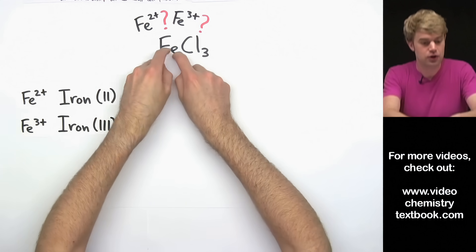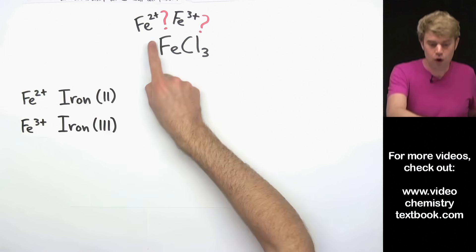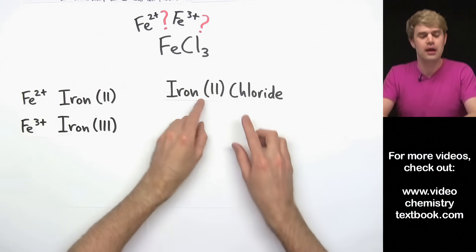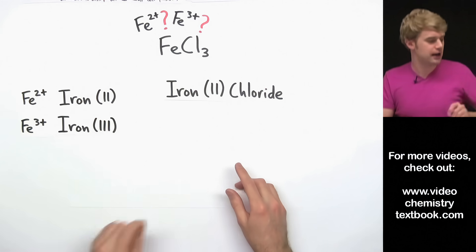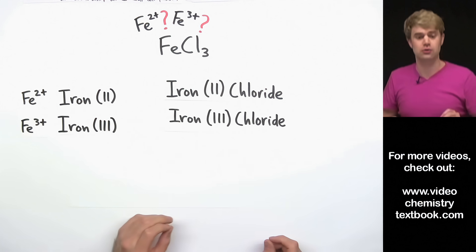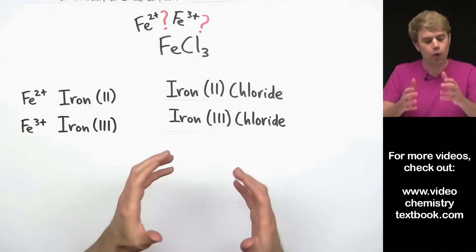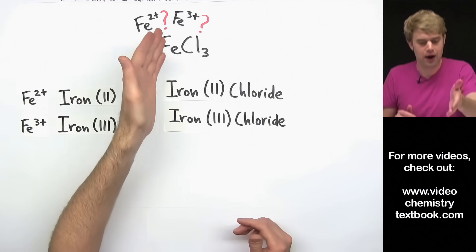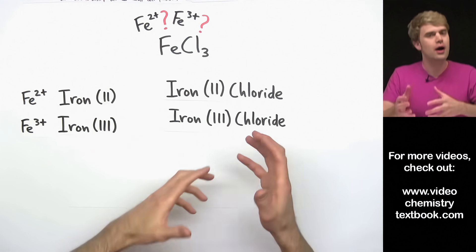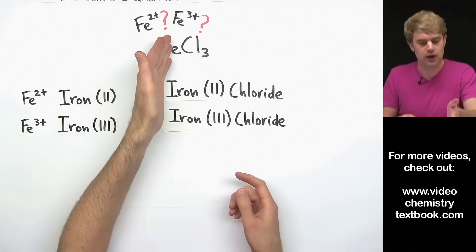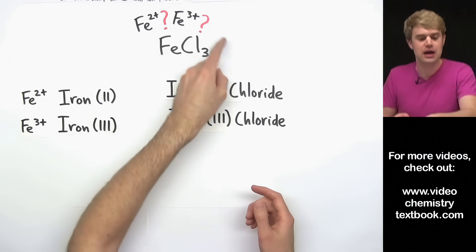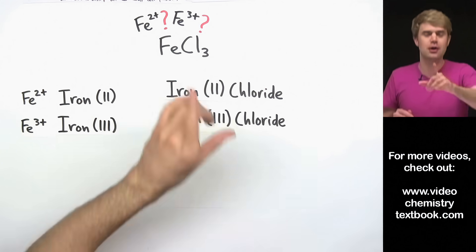So if the Fe turns out to be Fe2+, we'll call this compound iron(II) chloride. And if this iron is Fe3+, we will call the compound iron(III) chloride. In order to figure out which one we're talking about, we have to do a little bit of math and work backwards to figure out which charge iron has in this particular compound.